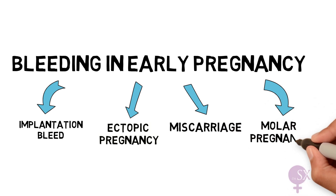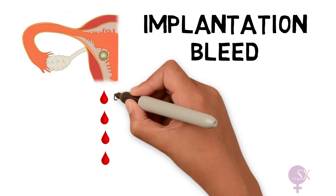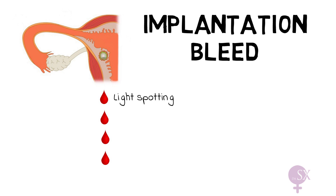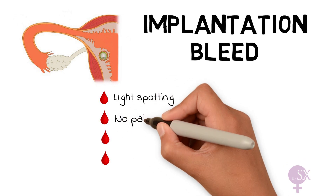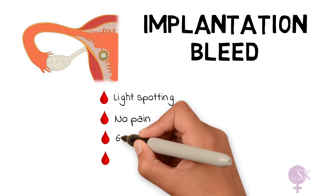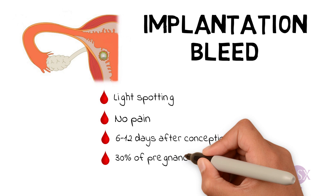First, we're going to have a look at implantation bleed. This happens when the fertilized egg attaches to the lining of the uterus and causes a tiny bleed. Patients will present with very light spotting and typically won't have any pain. It occurs 6 to 12 days after conception.